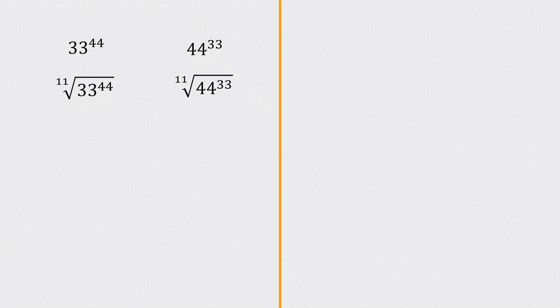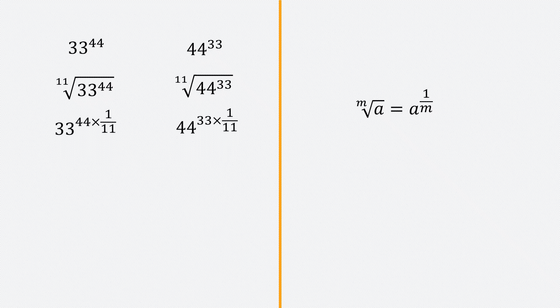We know the mth root of a number is that number to the power 1 over m. So I can rewrite the 11th root as raising each side to the power 1 over 11: 33 to the power 44 times 1 over 11, and 44 to the power 33 times 1 over 11.